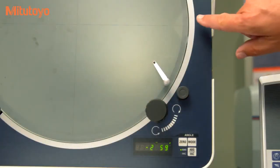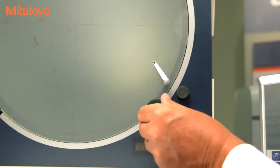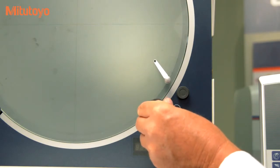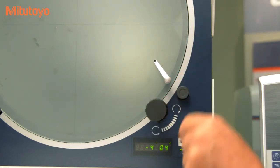The digital protractor can display in absolute or incremental units, and the screen can be locked to prevent rotational errors.